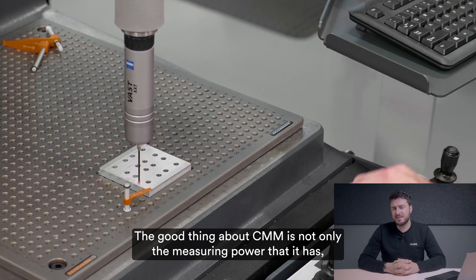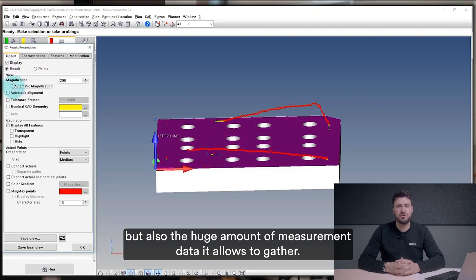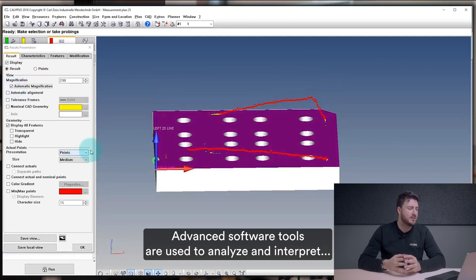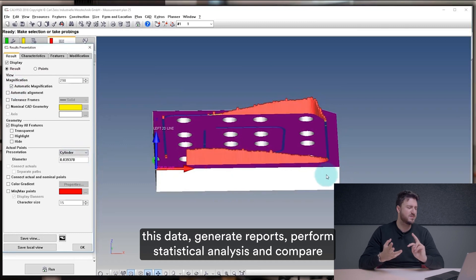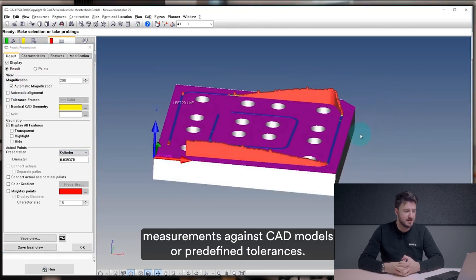The good thing about CMM is not only the measuring power that it has but also the huge amount of measuring data it allows to gather. Advanced software tools are used to analyze and interpret this data, generate reports, perform statistical analysis and compare measurements against CAD models or predefined tolerances.